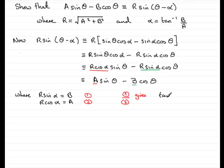So, you get tan alpha equals B over A. And what does that mean? Well, it means that, therefore, alpha is equal to the inverse tan of B over A. And that's what we had to show up here.